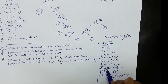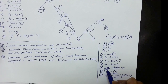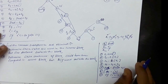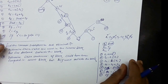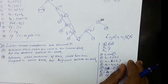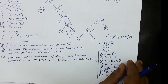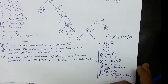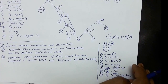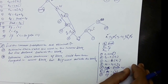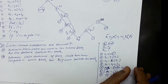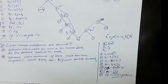This is something about the directed acyclic graph. You can take many other examples and form the DAG by yourself. Thank you.